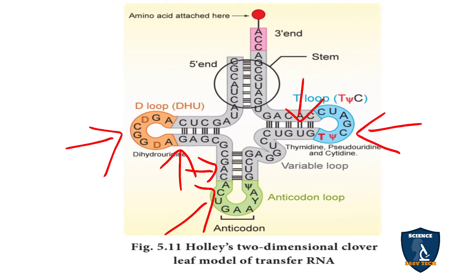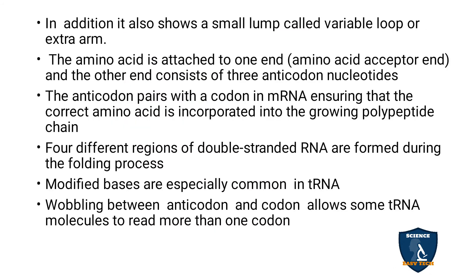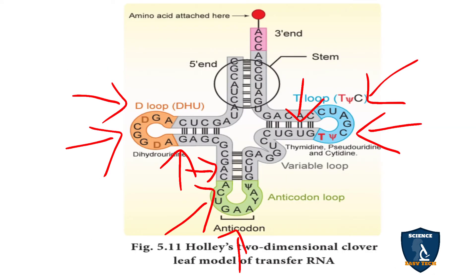The three arms have three loops at their ends: the D-loop, the anticodon loop, and the TψC loop. In addition, there is a variable arm, which is a small extra clump also called the variable loop or extra arm.